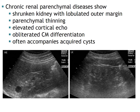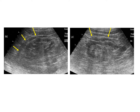Chronic renal parenchymal diseases show a shrunken kidney with lobulated outer margin, parenchymal thinning, elevated cortical echo, obliterated corticomedullary differentiation, and often accompanying acquired cysts. Sometimes when the kidney is shrunken due to chronic renal parenchymal disease, perirenal fat appears hypoechoic and may mimic fluid collection in the perirenal space.